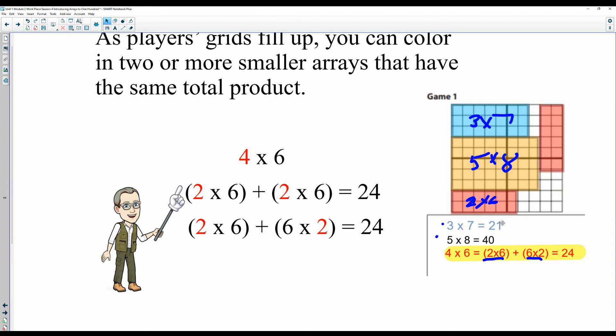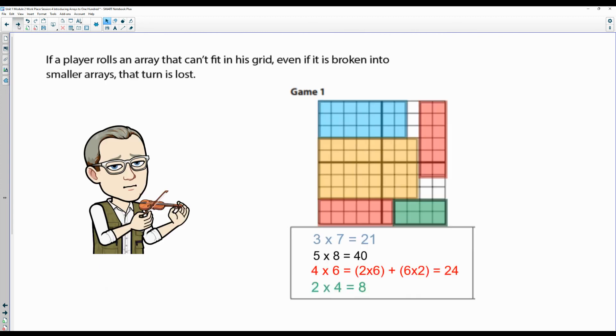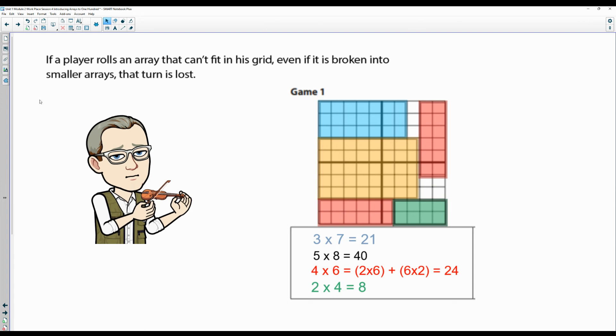If a player rolls and it can't fit in the grid, even if it is broken into smaller arrays, that turn is lost and the other person gets to go.